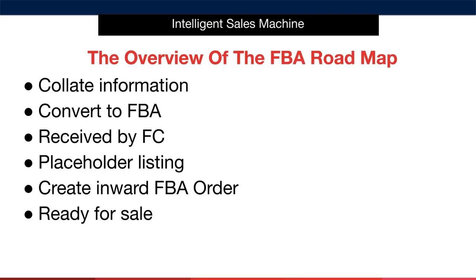We must be aware at this point that the stock will not be available as soon as it arrives, but Amazon are very quick to receive your stock and it is generally available for sale and dispatch within a matter of days. When this is complete and the stock is on the shelf, this activates the listing and the item is ready for consumers to purchase and Amazon to dispatch to them directly.